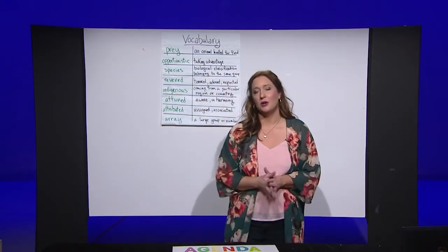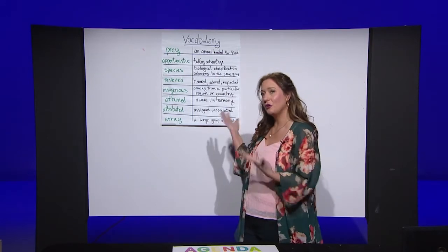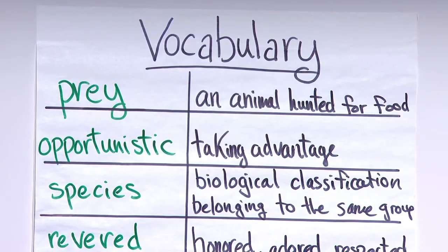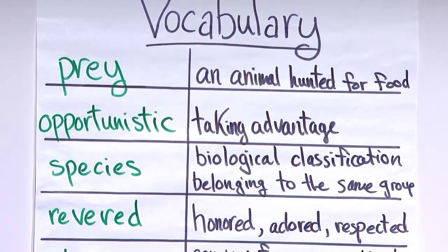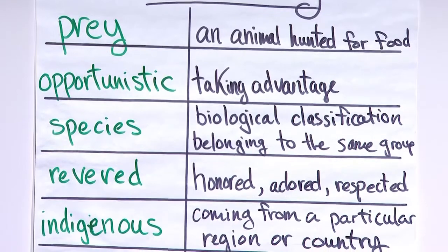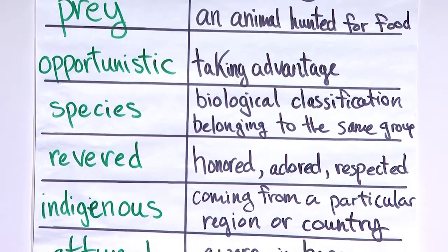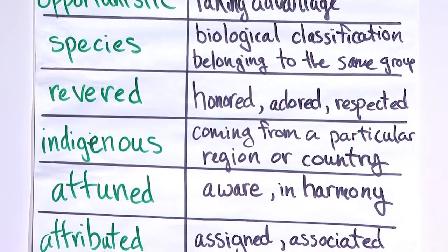Before we get too far into our lesson, I want to go over some vocabulary that we're going to encounter with our text. Look along with me to our word wall. One of the words we're going to see today is the word prey — an animal hunted for food. Another word is opportunistic, and that means taking advantage of a situation. We will see the word species, which means biological classification belonging to the same group. We will also see revered, which means honored, adored, and respected.